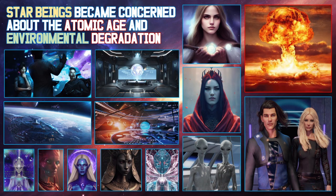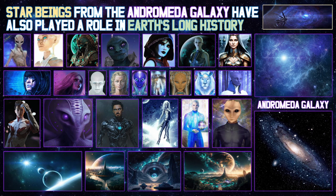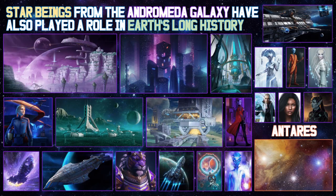Star beings became concerned about the atomic age and environmental degradation. UFOs deactivated nuclear sites and missiles to prevent disaster from accidents and atomic war. From the 1940s, a few service-to-self ETs began secret contact with some governments. So far, the story has been about star beings within 720 light-years of Earth. Beings from the Andromeda Galaxy have also played a role in Earth's long history. The Andromeda Galaxy is 2.5 million light-years from Earth. A wormhole connects the Andromeda Galaxy to the Milky Way Galaxy, exiting near Antares, which is 604 light-years from Earth.